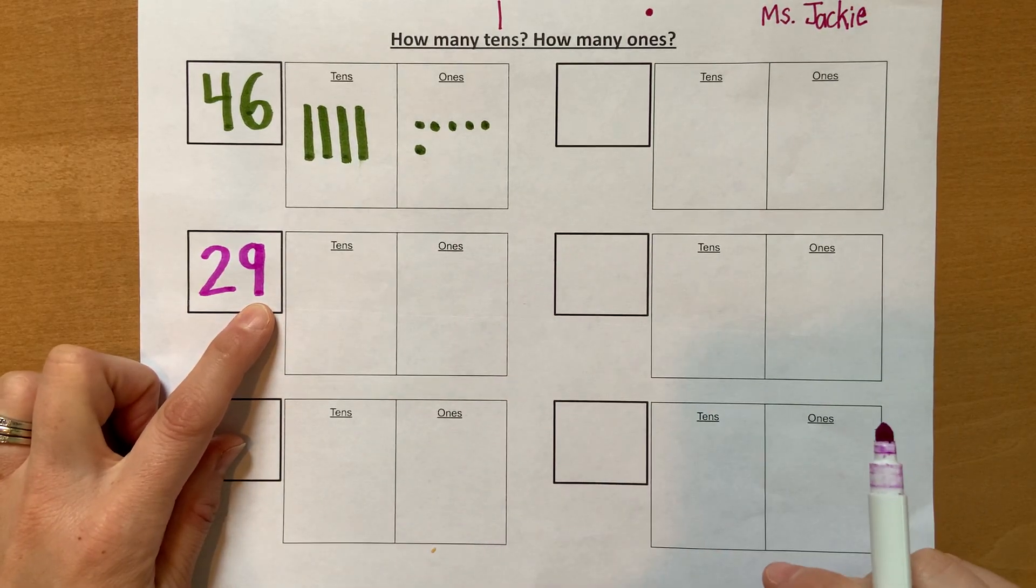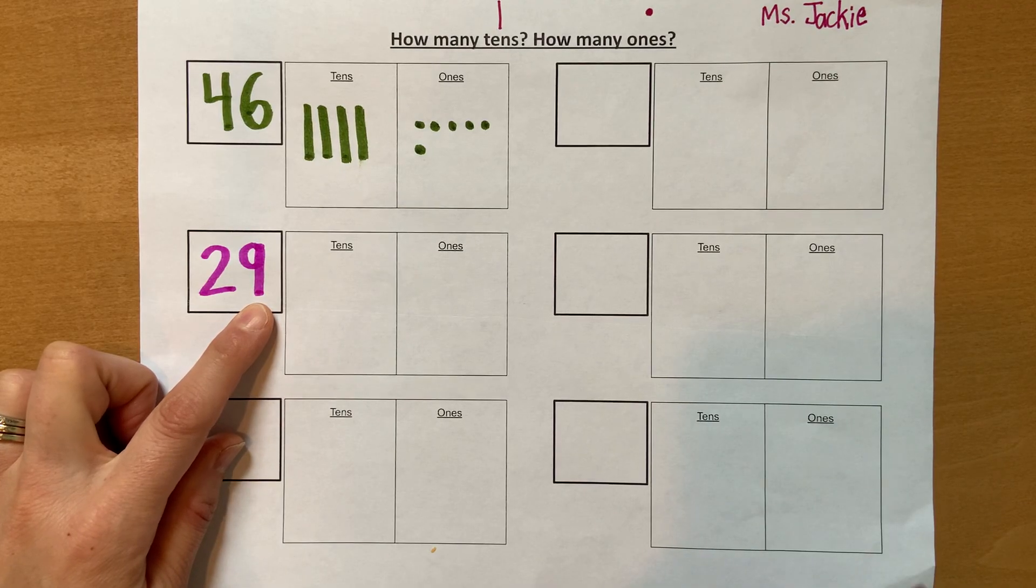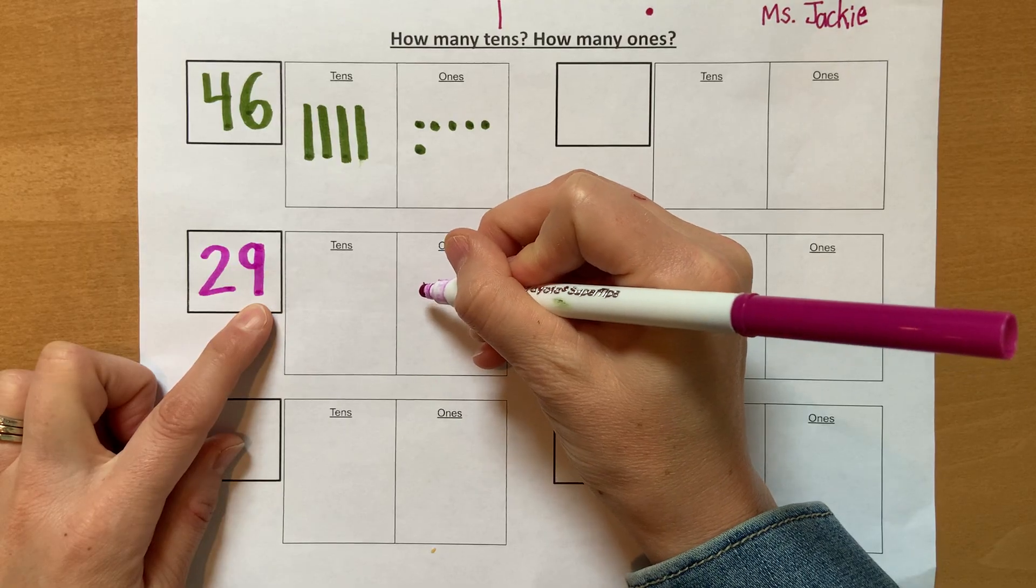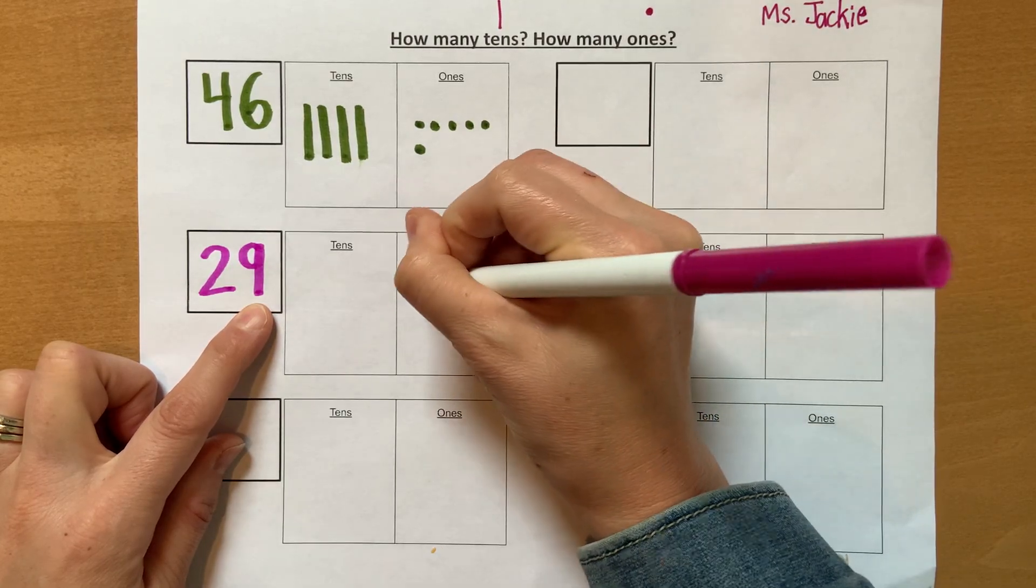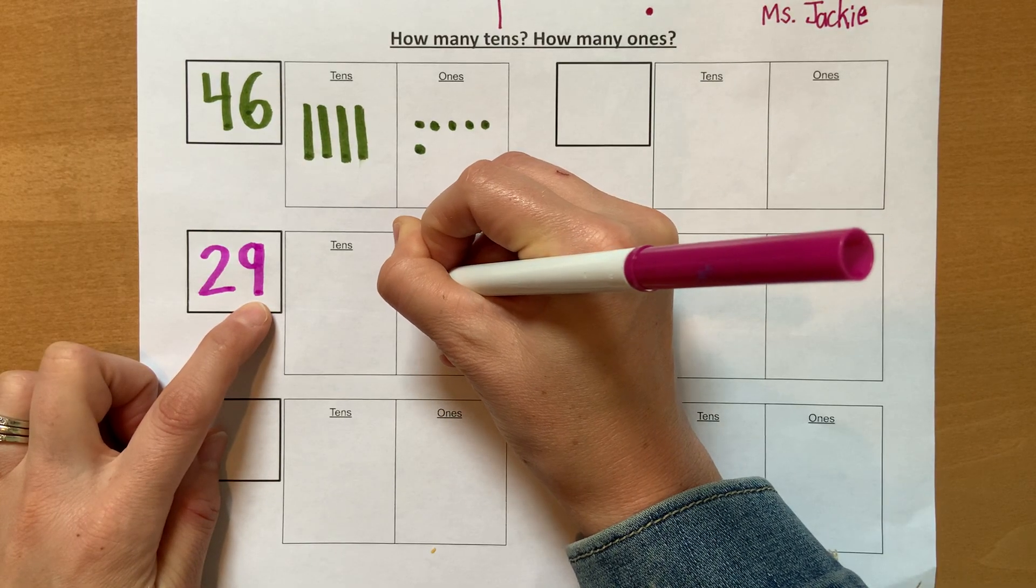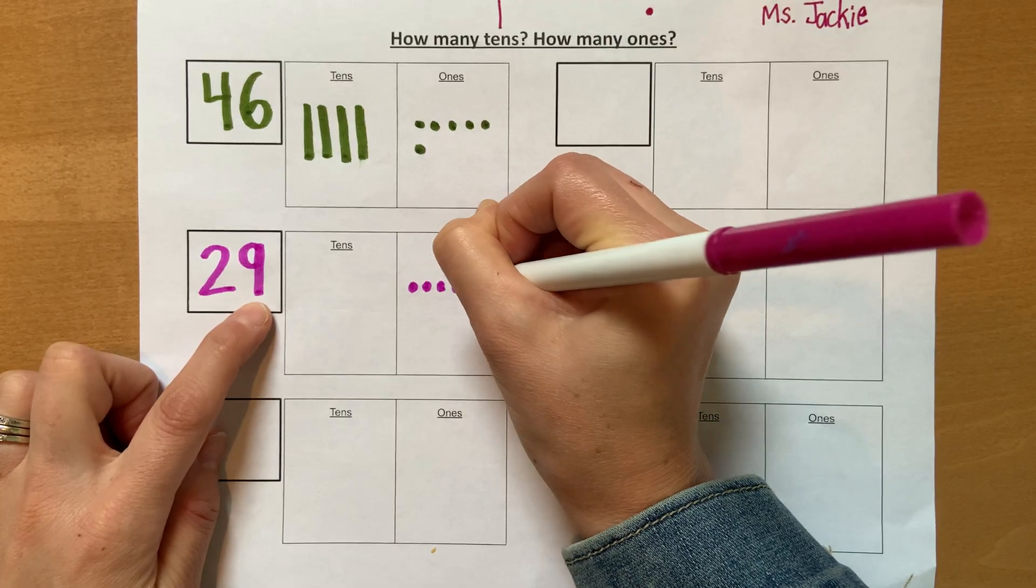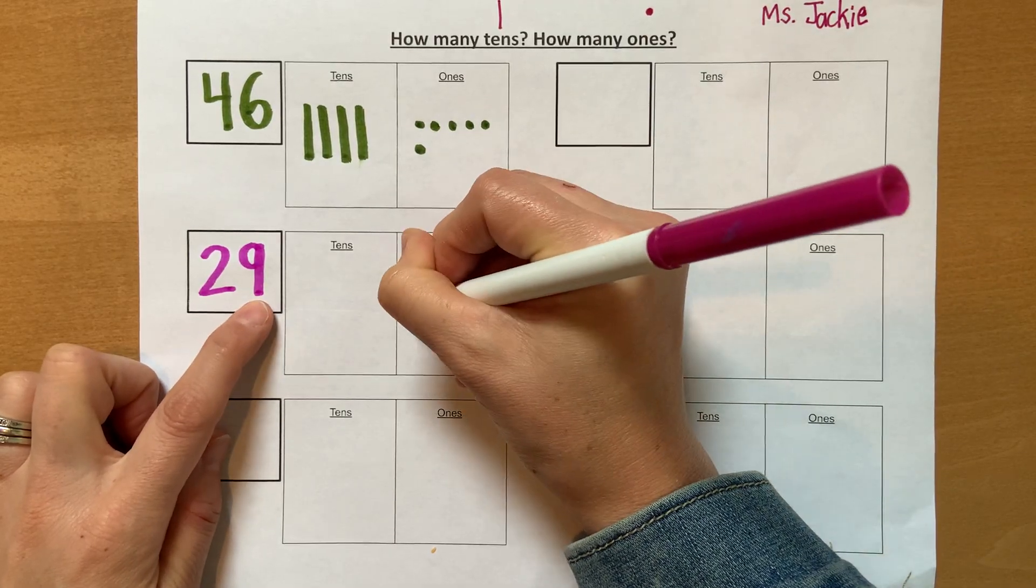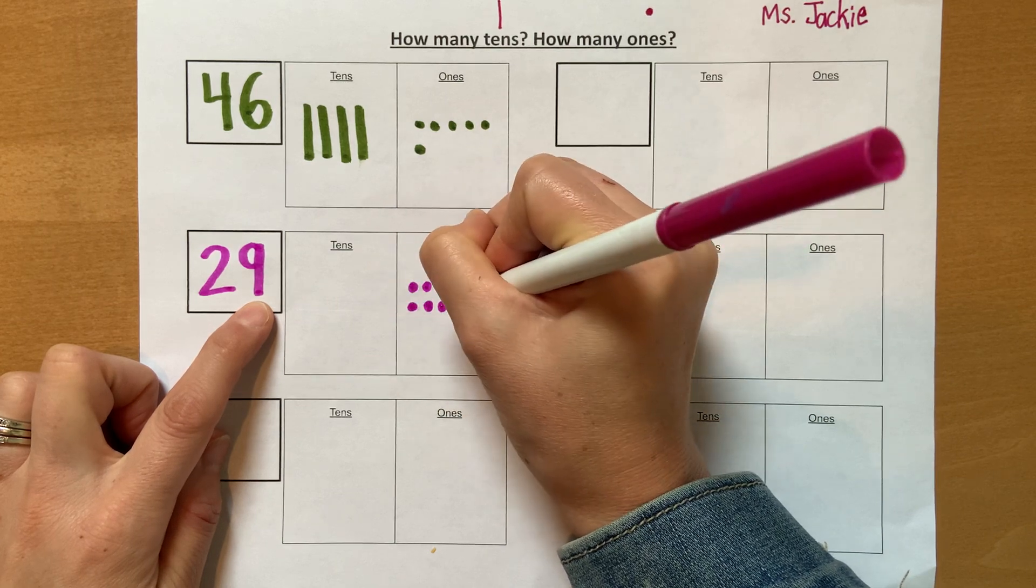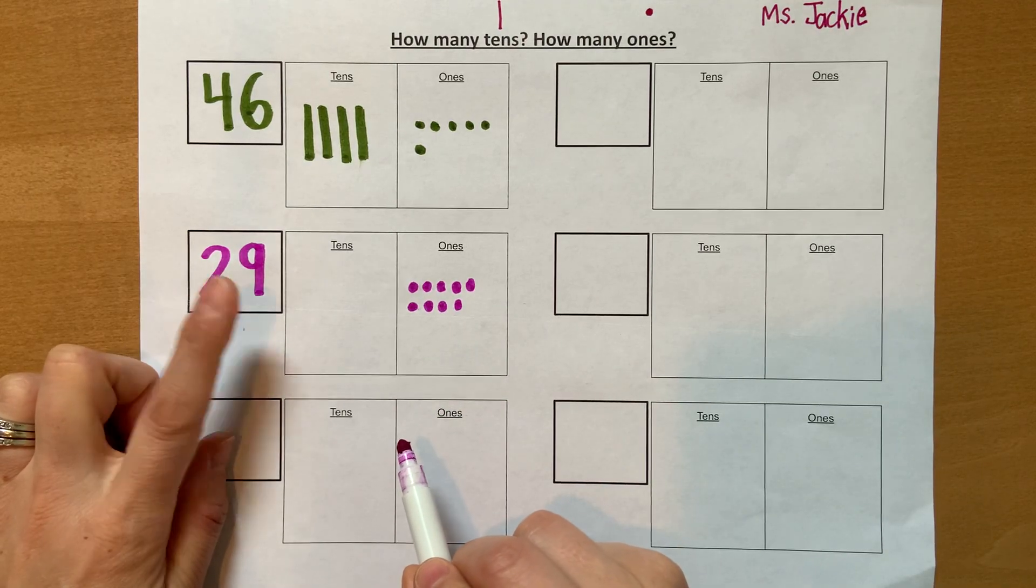I like to draw my ones like a tens frame. It helps me see and I can identify right away, super fast, how many there are. And in the tens frame, there are five on top and five on the bottom. So I'm going to start. I'm making the number 9 and it has more than five. So 1, 2, 3, 4, 5. I'm going to keep going: 6, 7, 8, 9. Okay, now I have 9 ones for my number 29.